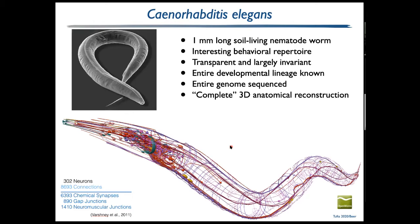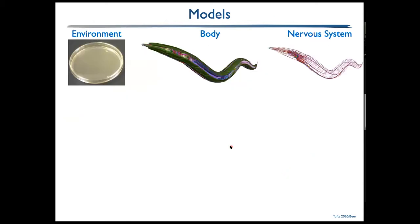My particular interest in this animal is that I think it's an ideal organism for empirically testing theoretical ideas I've been developing around brain-body-environment systems, both methodological and analytical tools. If we're going to build brain-body-environment models of C. elegans, we need to model its environment, its body, and its nervous system.